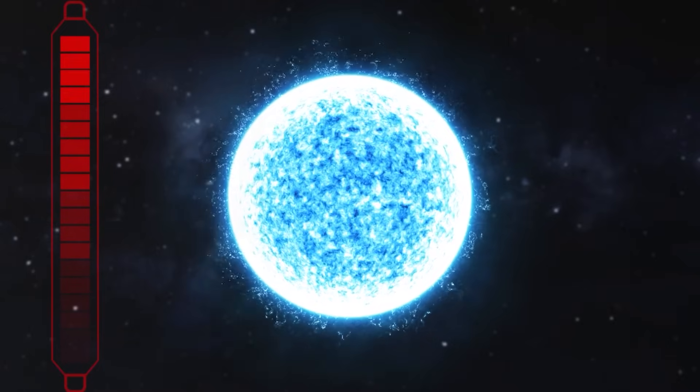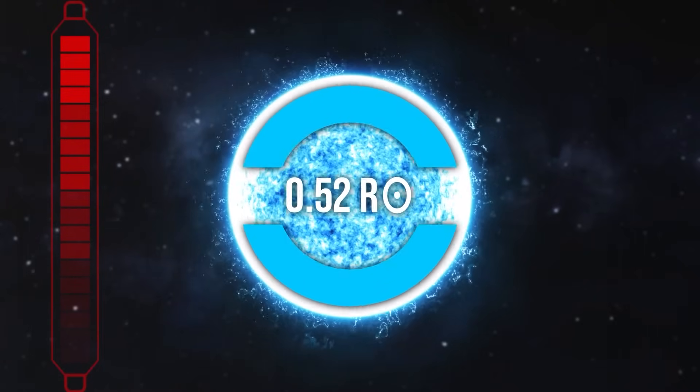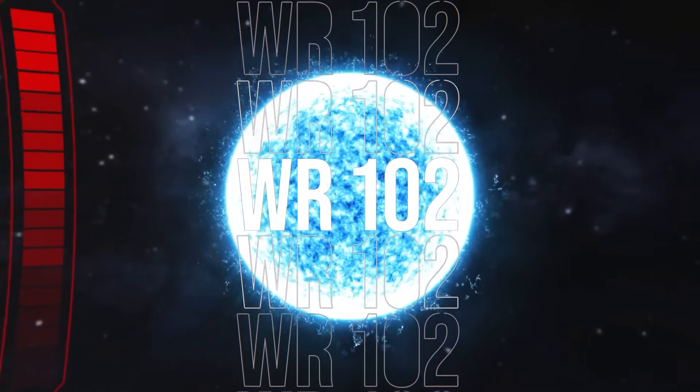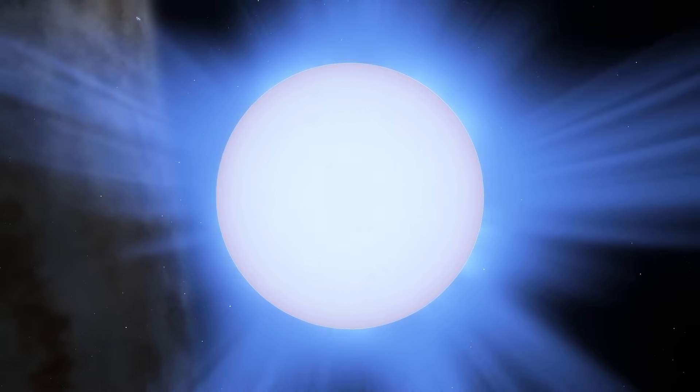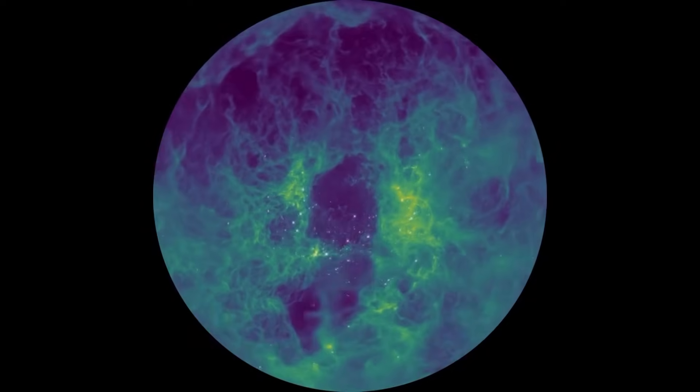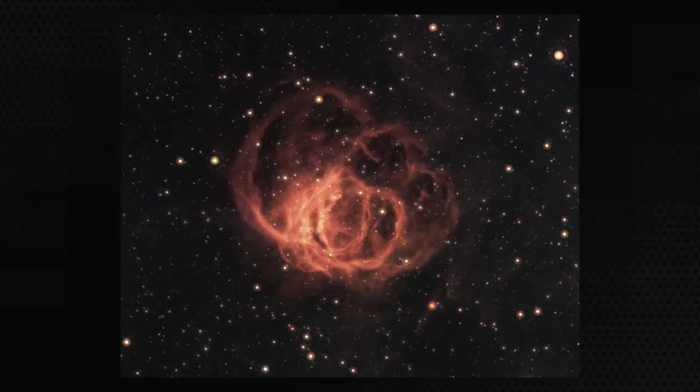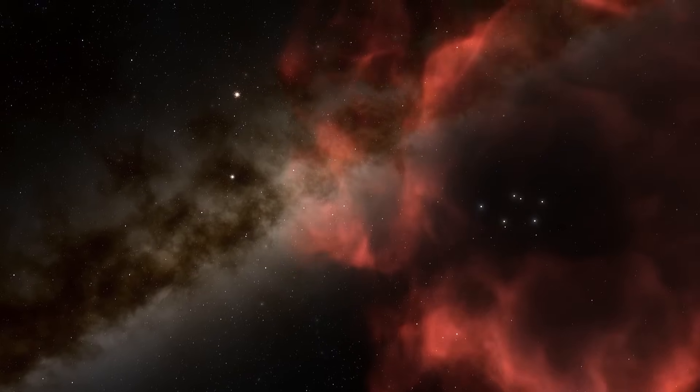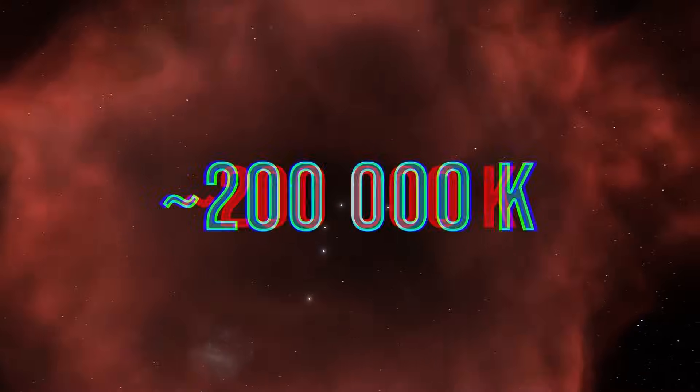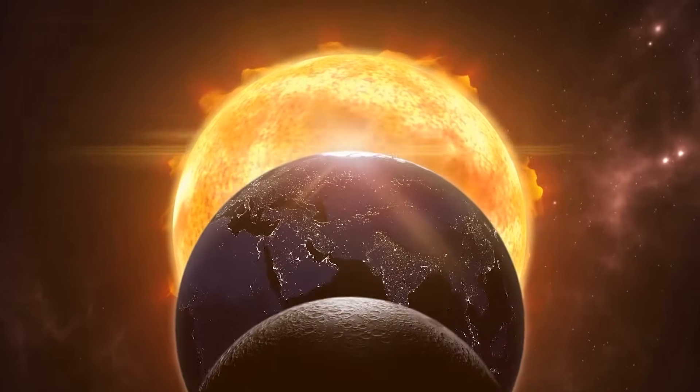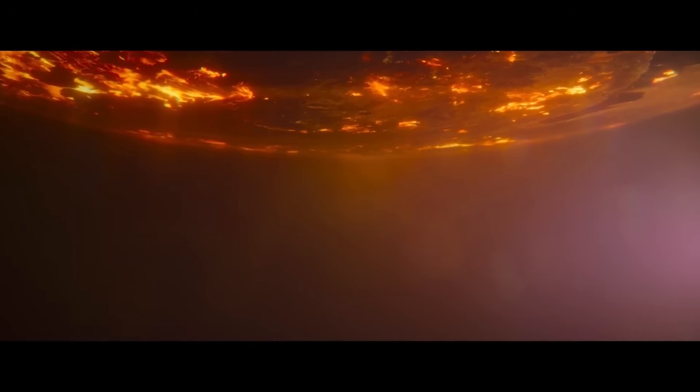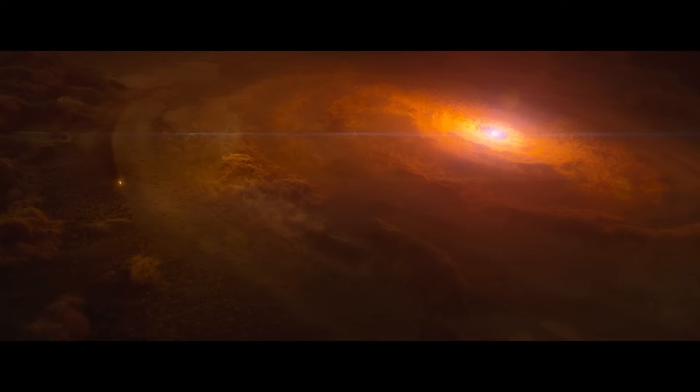Yet even R136a1 doesn't come close to the champion in this category, the true master of extreme heat. This unassuming star with a radius half that of the Sun is WR102, and it just might be one of the most dangerous stars in space. Its extreme stellar winds strip off mass hundreds of millions of times faster than the Sun sheds its own. These raging winds, along with powerful ultraviolet radiation, compress and ionize the surrounding interstellar matter, forming a bubble-like nebula around the star. All of this is due to the star's scorching temperature, which reaches about 200,000 Kelvins.